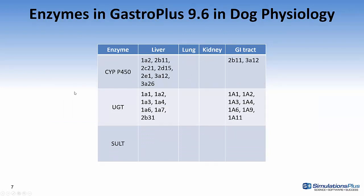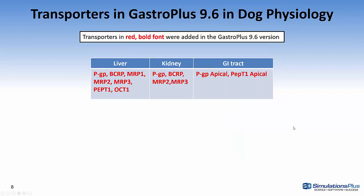For the dog physiology, no new enzymes were added for 9.6, but you can see we have cytochrome P450 and UGT defined in the liver and along the GI tract. This next slide shows dog physiology transporters in liver, kidney, and GI tract — and all of these were newly added for GastroPlus 9.6.